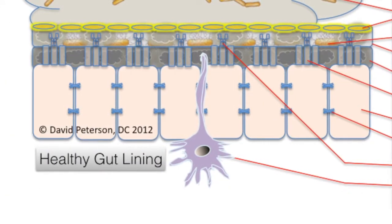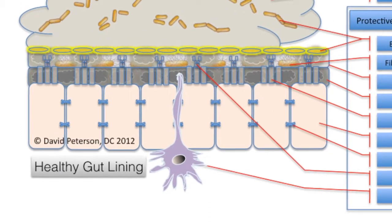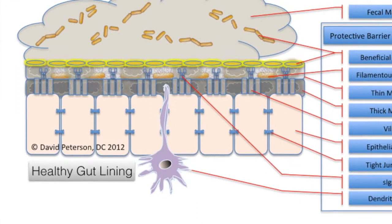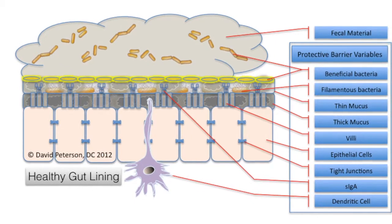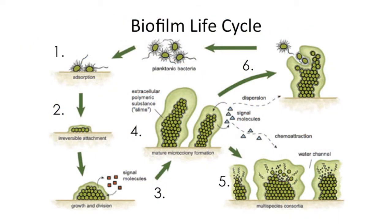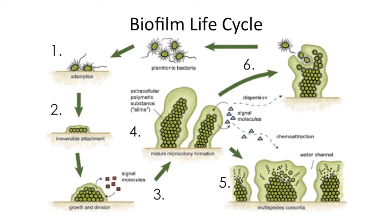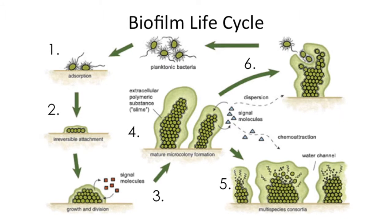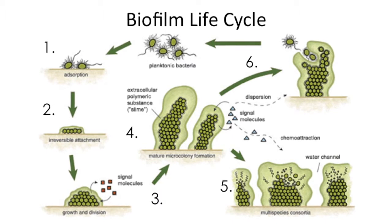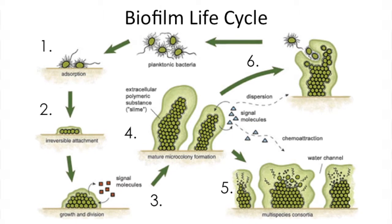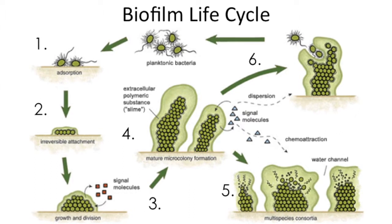Let's explore that further by looking at the stages of bacteria biofilm and polyp development. Biofilm is a defense mechanism for bacteria to protect themselves from digestive chemistry, antibiotics, and the immune system. In the biofilm life cycle, phase one involves bacteria attaching to any unprotected surfaces in the body. This is why there are such problems with artificial joint replacements — the biofilm from bacteria is causing their early deterioration.